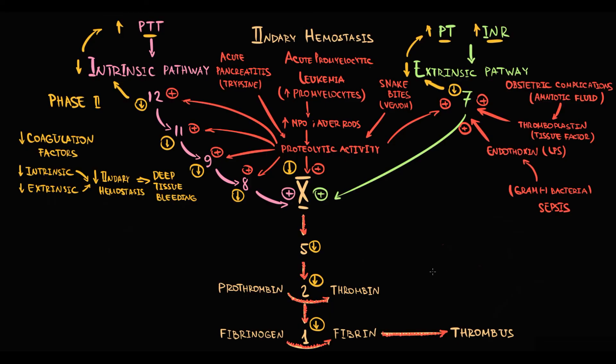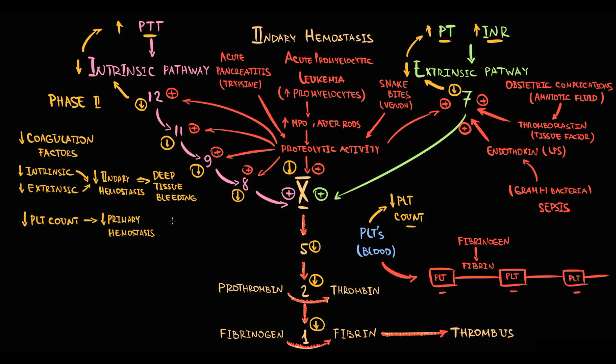In addition to this, we have to understand that a thrombus is basically a lot of platelets that are connected by fibrinogen that then becomes fibrin. So with a lot of thrombi formation, a lot of platelets are used. Increase in platelet consumption will cause decrease in platelet count. Decrease in platelet count will disrupt primary hemostasis.